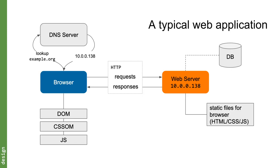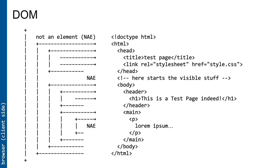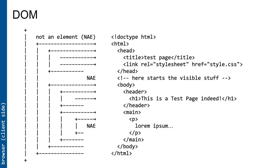Looking at the DOM and events: here is a simple web page with a link to a stylesheet, and each one of those tags is an element. Note that the doctype itself isn't an element, and plain text content inside tags isn't an element either — it's a tree-like structure representing your page. In JavaScript, to find an element you can use window.ex1 because the h1 id is ex1, but this is fragile. The best way is to use querySelector, which lets us use a CSS query — the hash indicates we're looking for an element with a specific id.